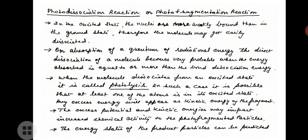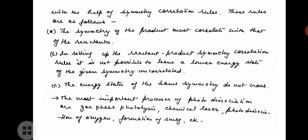The energy states of the product particles can be predicted with the help of symmetry correlation rules. These rules state: the symmetry of the product must correlate with that of the reactants; it is not possible to leave a lower energy state of a given symmetry uncorrelated; and energy states of the same symmetry do not cross.